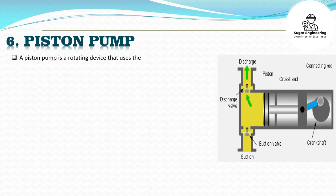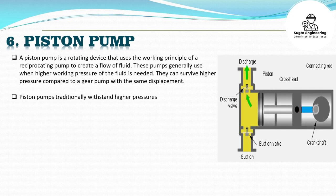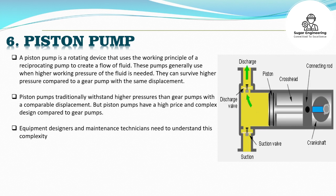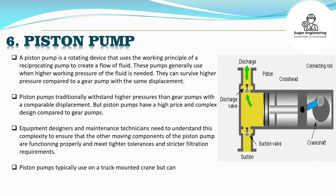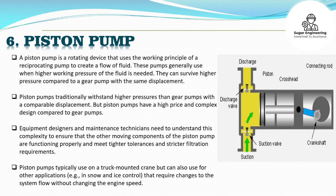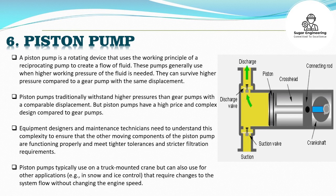A piston pump is a rotating device that uses the working principle of a reciprocating pump to create a flow of fluid. These pumps are generally used when higher working pressure of the fluid is needed. They can survive higher pressure compared to a gear pump with the same displacement. Piston pumps have a high price and complex design compared to gear pumps. Piston pumps are typically used on truck-mounted cranes but can also be used for other applications, such as snow and ice control, that require changes to the system flow without changing the engine speed.